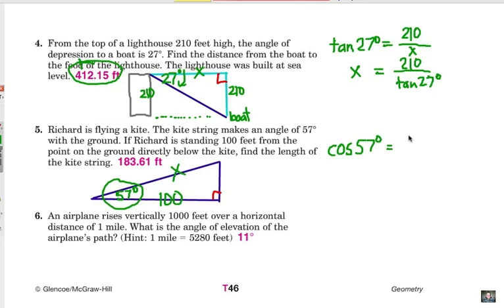So cosine of 57 degrees equals 100 over X. Now, once again, just like number four, if I have a variable in the denominator here, let's go ahead and switch diagonally these two parts. Because we're cross-multiplying, the result will be the same. In other words, X then becomes 100 divided by the cosine of 57 degrees. So on your calculator, figure out cosine of 57 degrees, and then divide it into 100, and you'll get 183.61 feet.